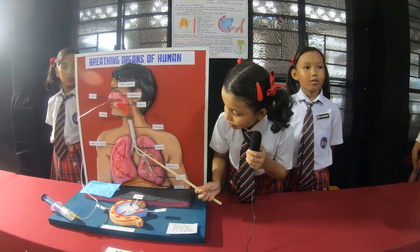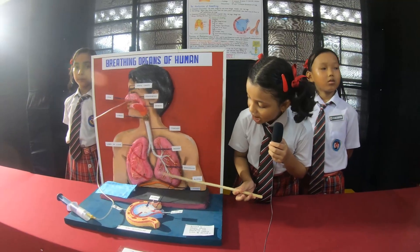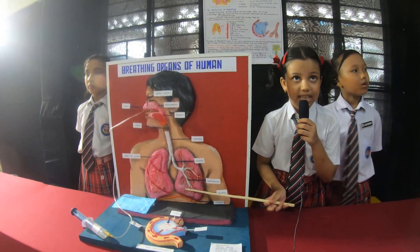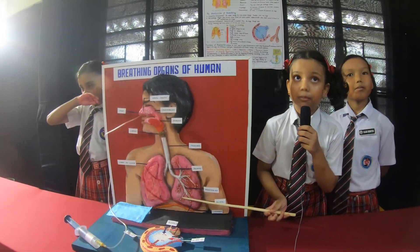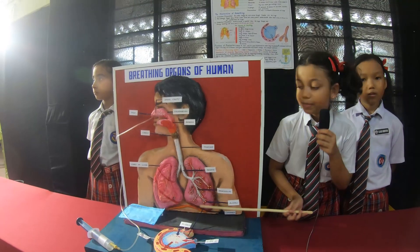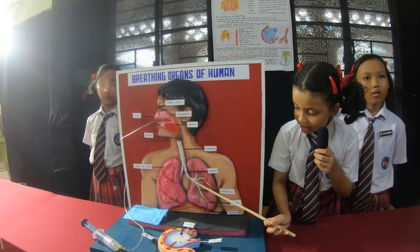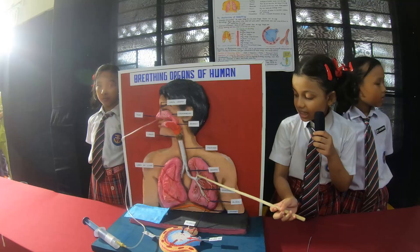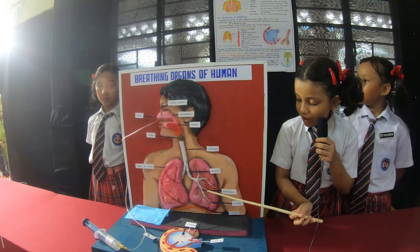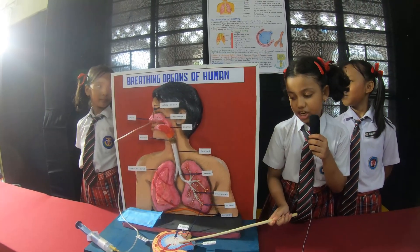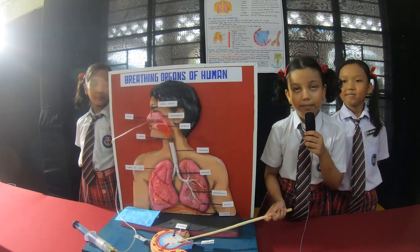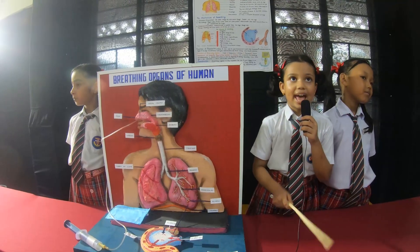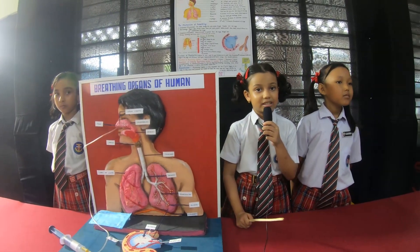Then comes the bronchi and bronchioles, which carry air to the alveoli. Alveoli are tiny sacs which are the most important part of the lungs. This is the cut section of the lung. Here we can clearly see these alveoli. There are millions of alveoli in the lungs. Gas exchange occurs here. Then there is a diaphragm which contracts and relaxes to expand and shrink the lungs.